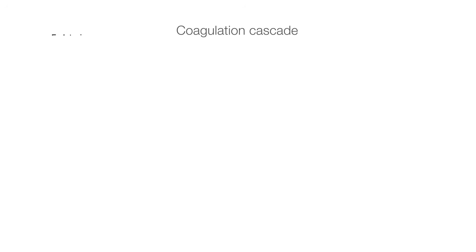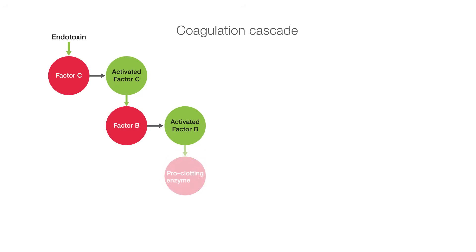When endotoxin encounters the lysate, a cascade of enzymatic reactions results in the activation of factor C, factor B, and proclotting enzyme. The activated enzyme catalyzes the release of para-nitroaniline, or PNA, from the colorless chromogenic substrate, producing a yellow color.